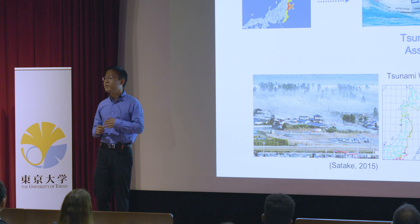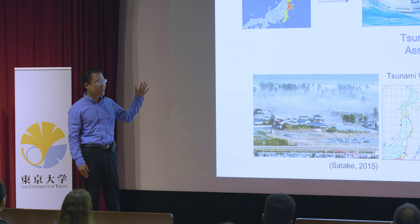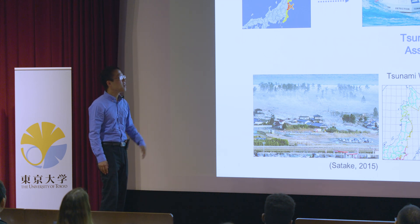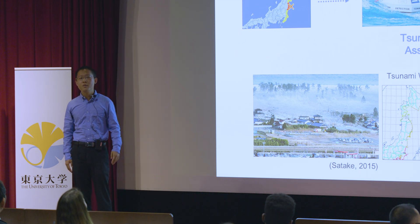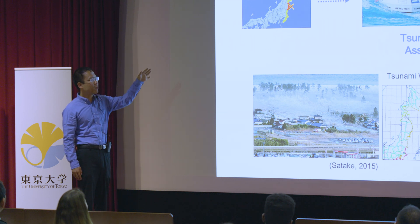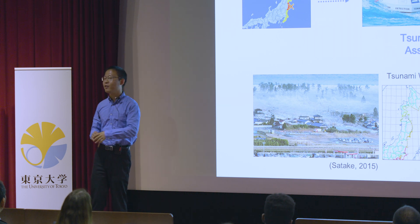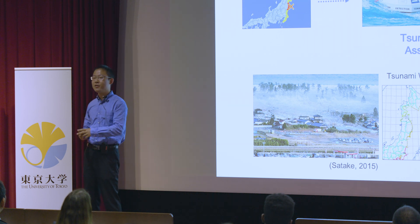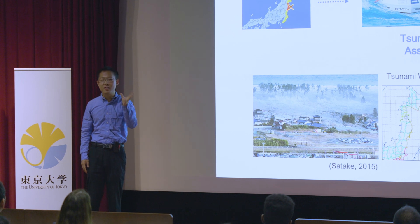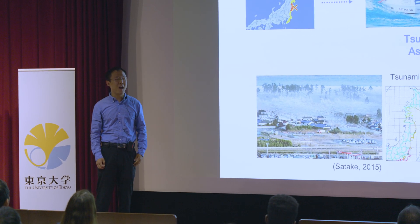Therefore, it is very important for us to provide valid tsunami forecasting in order to mitigate the disasters. At the Earthquake Research Institute, we are working on tsunami forecasting based on tsunami observation. Near Japan, in the Nankai trough and the Tohoku region, we have installed numerous tsunami sensors which detect water pressure changes and can convert them to tsunami height.